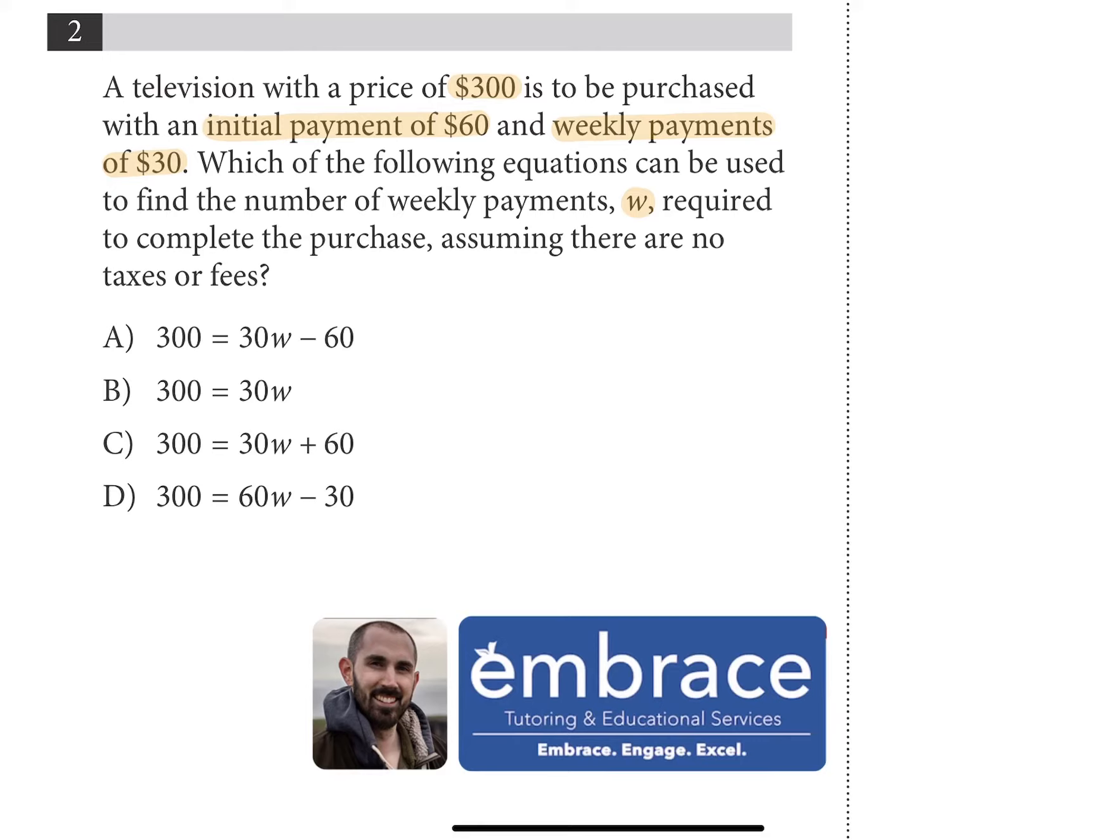So if I scan through my answer choices I notice that all of these are linear models, and I can tell they're all linear models because the only variable in the equation is expressed to the first power. And that's true for any linear model where the highest power, whenever you see a variable the highest power is 1, you know you're dealing with a linear model.